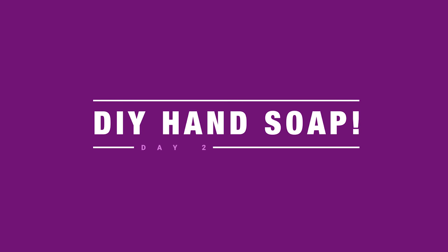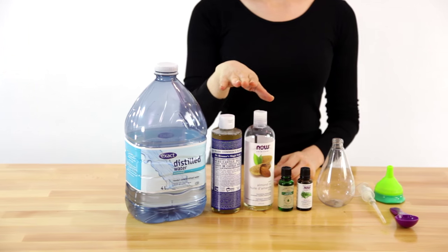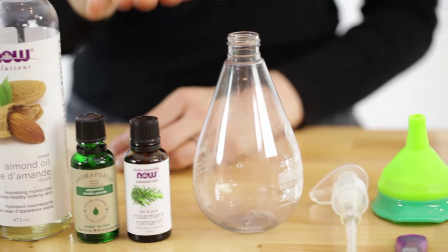Let's make DIY hand soap. All you'll need for this is distilled water, castile soap, almond oil, essential oils, and an empty soap pump.